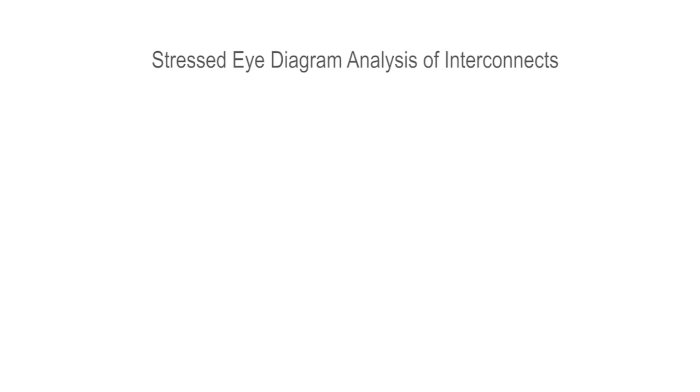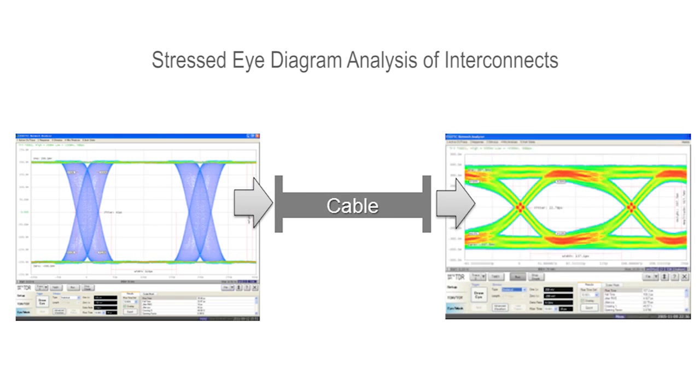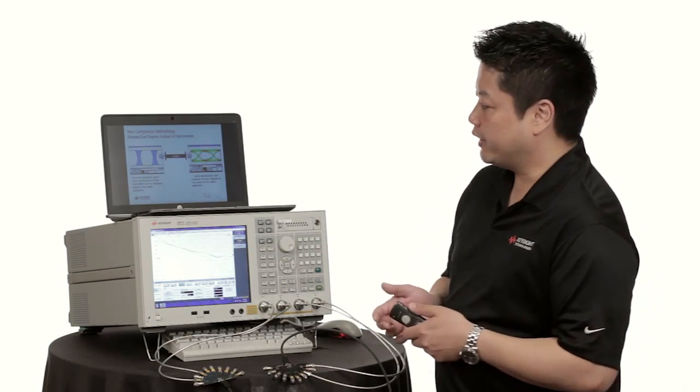So what we do here is rather than measuring the individual time domain and frequency domain response, we're going to characterize the cable using eye diagrams. Rather than breaking it down into individual components, we can characterize the cable and do pass-fail testing on the overall response. That allows for trade-offs between the different parameters.